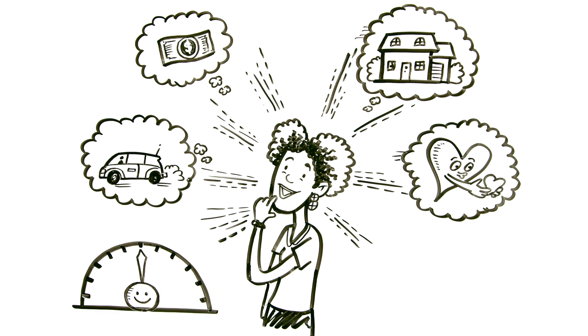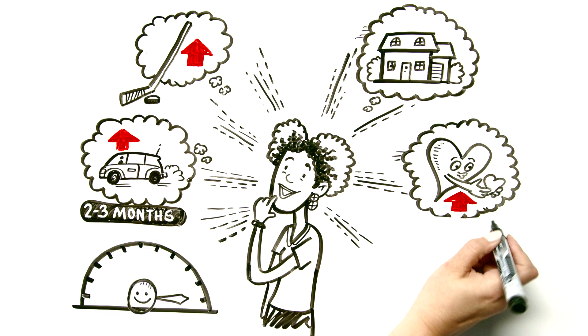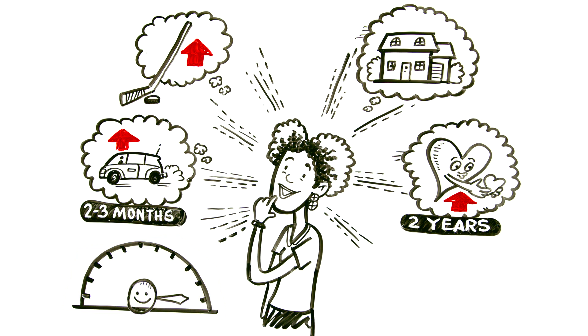But the research says that sure, there is a boost with the new car, a new hockey stick, a new marriage. But after time, so with the car, this might be a few months and the generally accepted time with the marriage is about two years, the new becomes the norm. And our happiness quotient drops back to what it was.